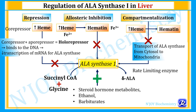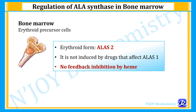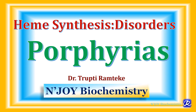Regulation in bone marrow erythroid precursor cells: ALAS2 is the erythroid form of ALAS. It is not induced by drugs that affect ALAS1, and there is no feedback inhibition by heme. In today's video we have learned about heme biosynthesis and its regulation. The next video will be on porphyria — heme biosynthesis disorders. Thank you for watching and happy learning.